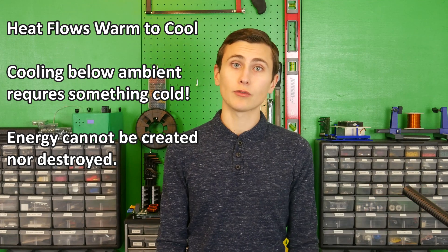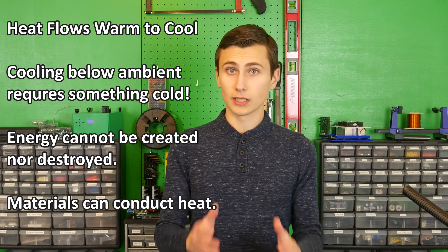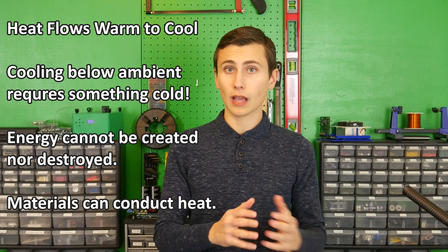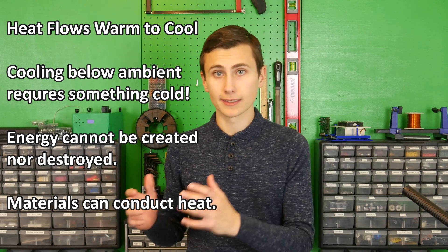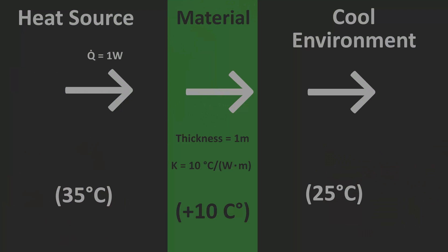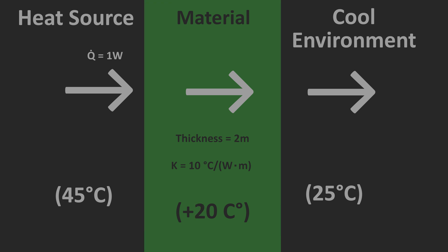Materials transfer energy through them, including heat. This is very similar to how all materials have electrical conductivity — they also have a thermal conductivity. The thicker a material is, the better insulator it is. Some materials are intrinsically better conductors or insulators, but having more thickness will always increase the thermal resistance. This is the same way that metal may be better or worse at conducting electricity compared to a clay brick — it's just a part of the material itself.